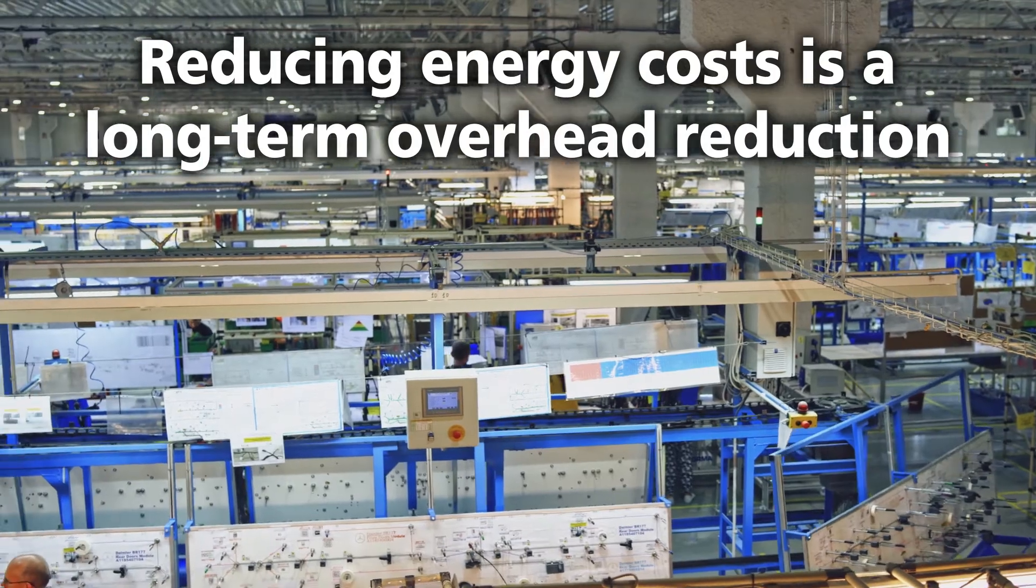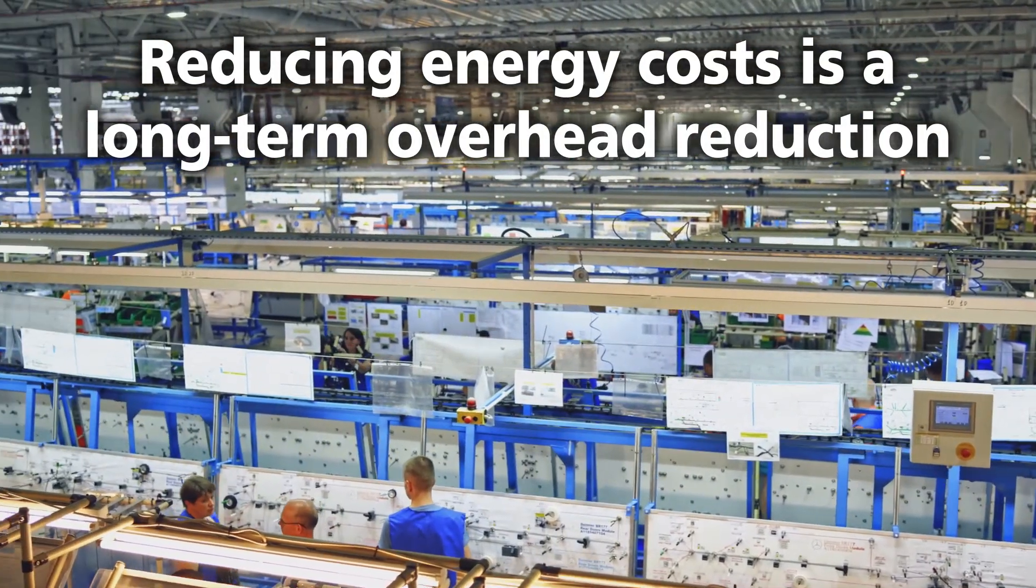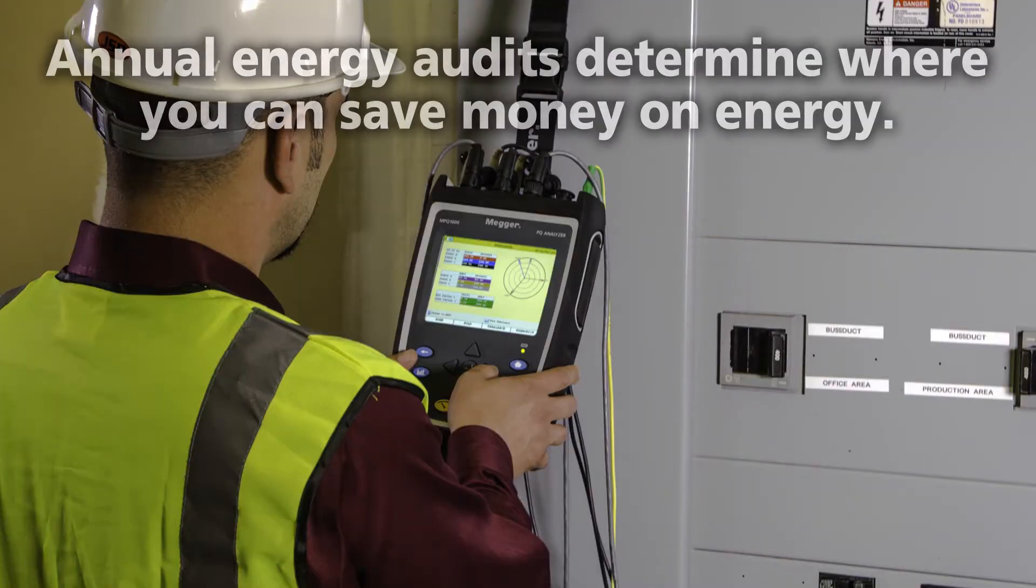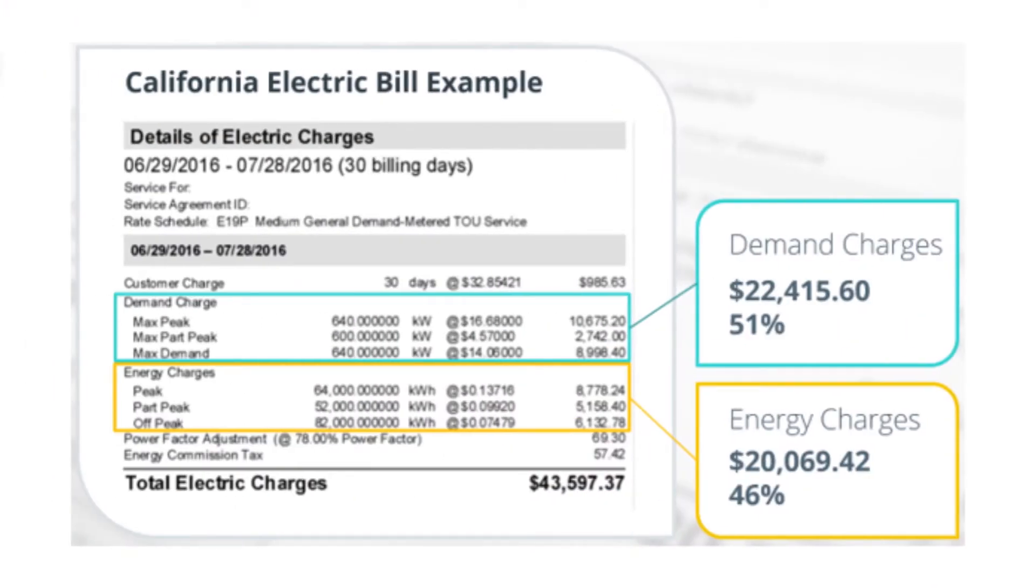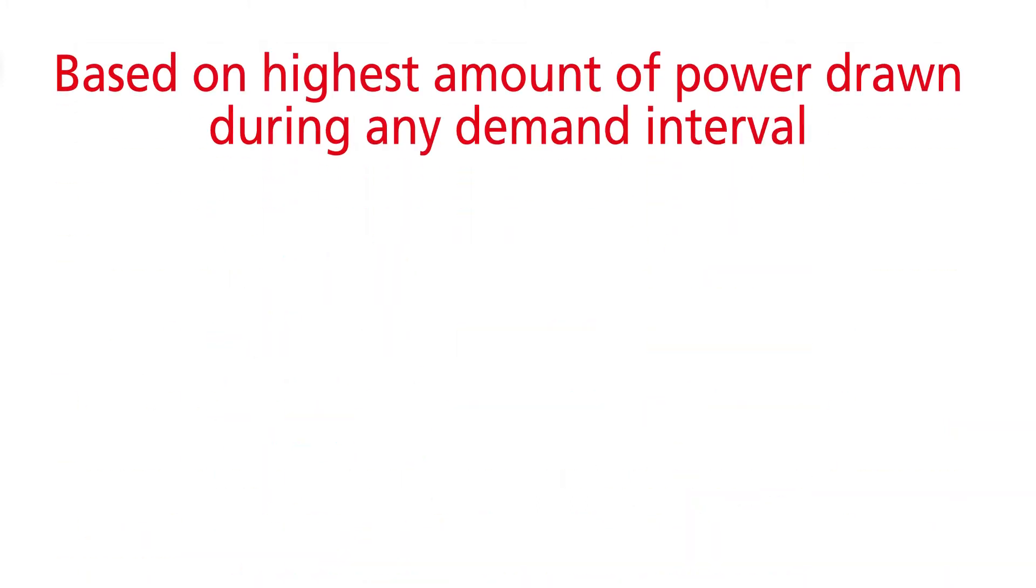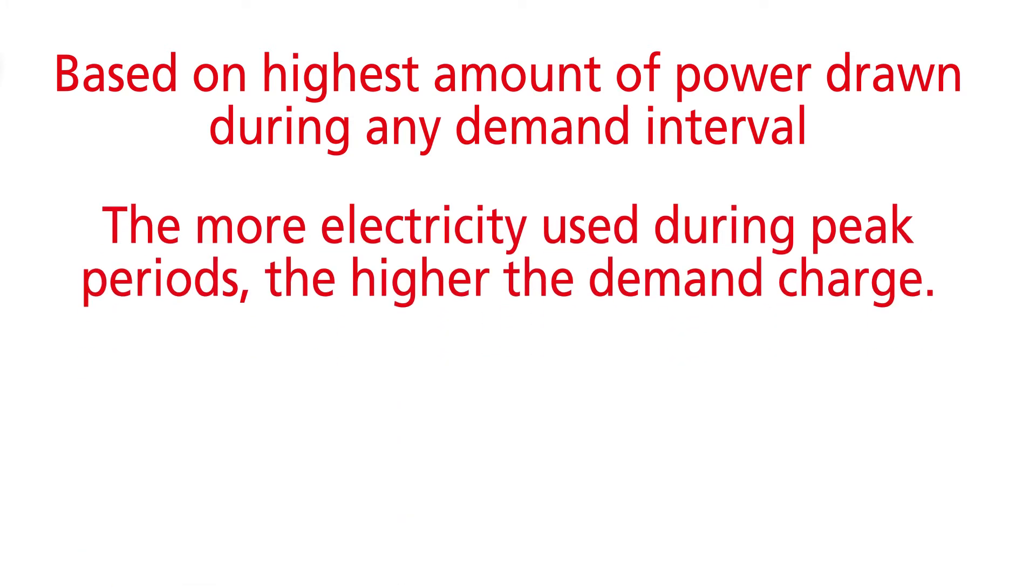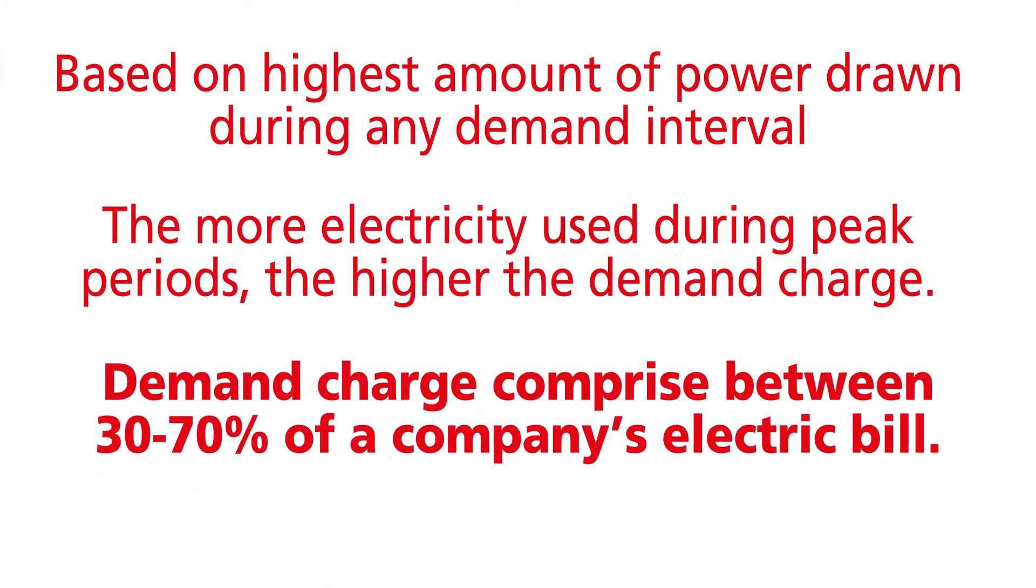Reducing energy costs is a long-term overhead reduction that can be beneficial to both management and labor. Performing annual energy audits is a way to determine where you can save the energy. Industrial energy is used based on demand rate. Distribution demand charge applies to both commercial and industrial entities that pay time of use rates or have certain bill sizes. It is based upon the highest amount of power drawn during any demand interval during the billing period. The more electricity you request during peak periods, the higher your demand charge can be. Demand charges can comprise between 30 and 70 percent of a company's electrical bill.